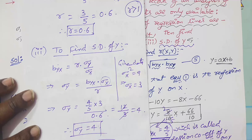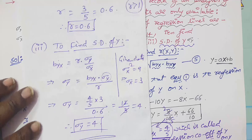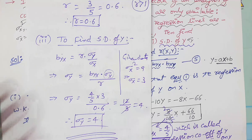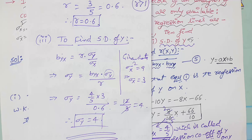In this way, we can easily find out all unknown values from the given regression lines. Thank you very much. In the next video, I will give some more examples on correlation coefficients and regression lines. Thank you.